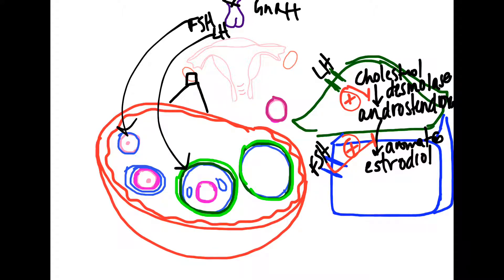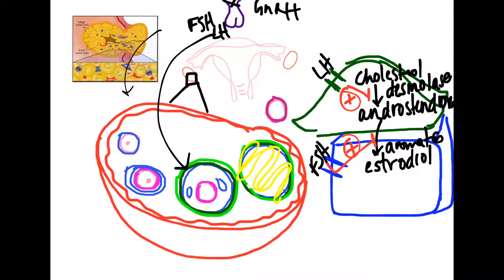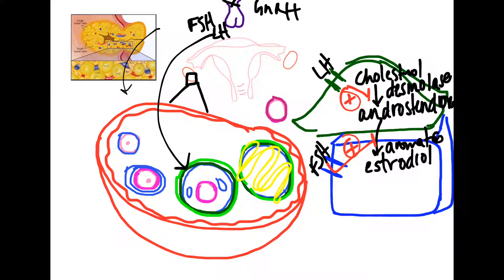This Graafian follicle degenerates and it forms what is known as the corpus luteum. I will show you a picture of the corpus luteum right now. So this is what the corpus luteum looks like. The corpus luteum is nothing but all the luteal cells which enlarge and they start secreting other hormones.